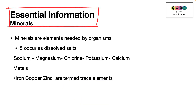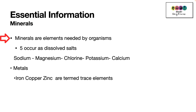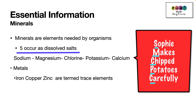There are other elements required, often referred to as minerals. Minerals are elements needed by organisms, and five of them occur as dissolved salts: sodium, magnesium, chlorine, potassium, and calcium. The best way to remember them is the rhyme 'Sophie makes chipped potatoes carefully' — take the first two letters of each word to get the first two letters of each element.